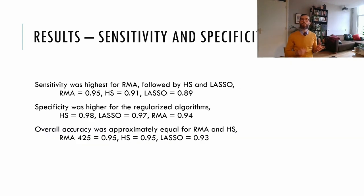We also examined the sensitivity and specificity of these different algorithms. Sensitivity is the ability to correctly identify that a moderator is relevant, and specificity is the ability to correctly reject a moderator if it is not relevant. What we found was that sensitivity was the highest for RMA, but specificity was higher for our regularizing algorithms, and the overall accuracy of all methods was approximately equal. That means that our method trades off better rejection of irrelevant moderators for worse selection of relevant moderators, while maintaining an overall similar error rate.